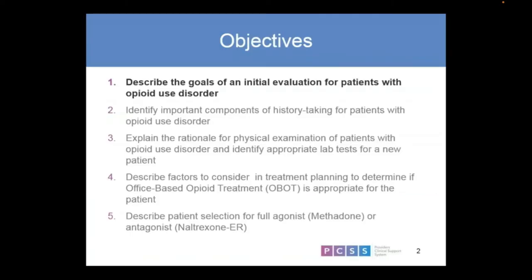I have quite a few objectives this time around. Number one: describing the goals of initial evaluation for patients with an opioid use disorder; identifying the four components of history taken for patients with an opioid use disorder; explaining the rationale for physical examination of patients with opioid use disorder, or OUD; and identifying appropriate lab tests for a new patient.